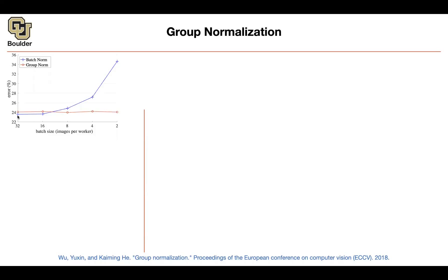If you have 32 images per each worker — each GPU — you're getting very good error rates on ImageNet. This experiment shows what happens as you decrease your batch size. Tracking the blue curve: at 16 you're still not bad, but as you go to smaller batch sizes, your error rate goes up significantly. If you process two images per GPU, your error rate is around 35% compared to 24%. Group normalization is not that sensitive to batch size, but if your batch is big enough, batch normalization is still better than group normalization.